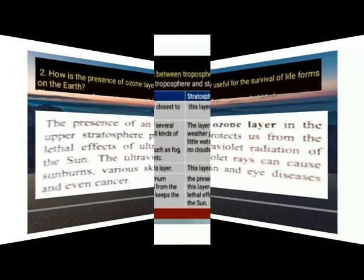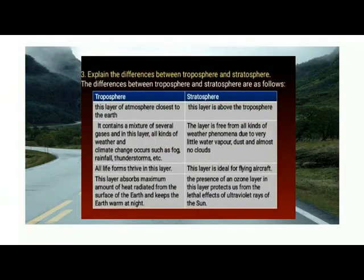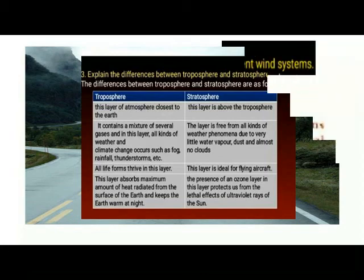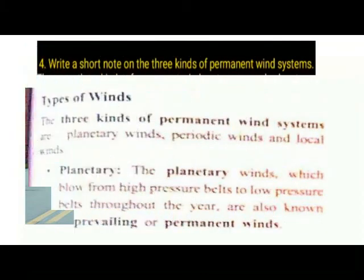Detail 3. Explain the difference between the troposphere and the stratosphere. The troposphere is the layer closest to the Earth. All weather and climate changes such as fog, rainfall, lightning, cloud formations, snowfall, thunder, storms, and so on also take place in this layer.